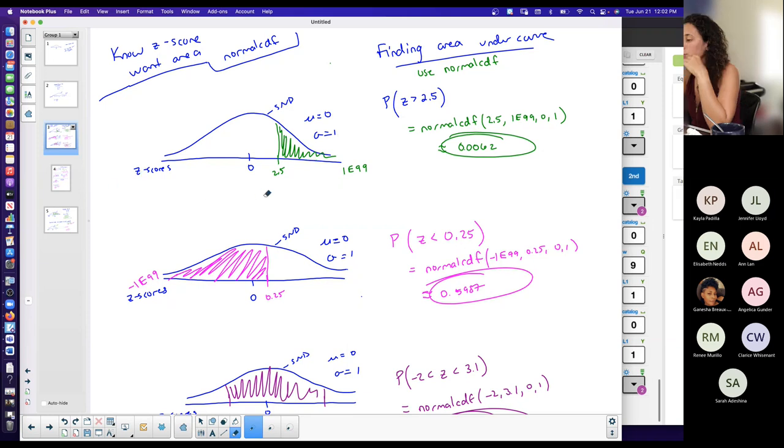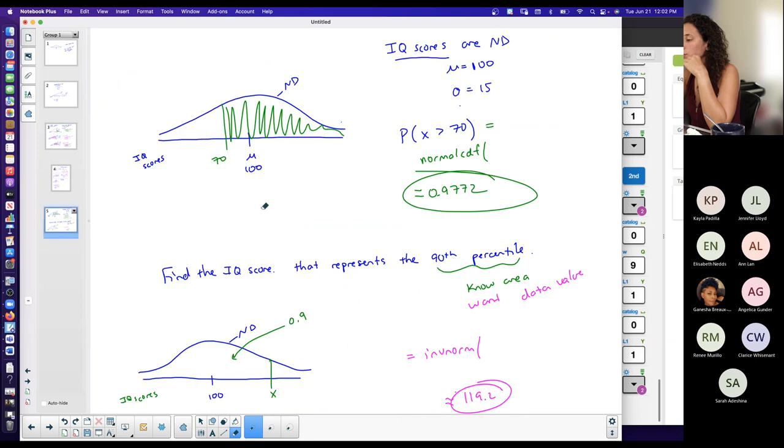So if you want an area, it doesn't matter whether you're here or there. If you want an area, you use normal CDF. And if you know the area and you want the value, then you use inverse norm. And this is really it for this week. Obviously there's word problems and stuff that can vary. Then you have to interpret what you need, whether it's a percentage or whether you need a value and you know the percentage and the location of it, because you don't always have the figure drawn for you.